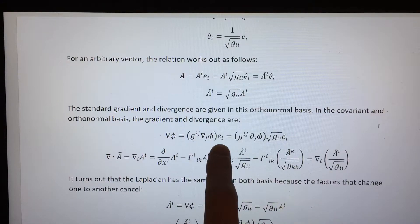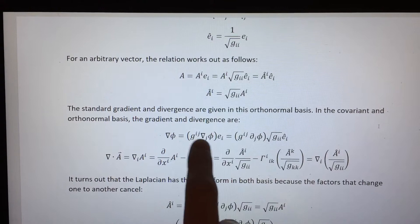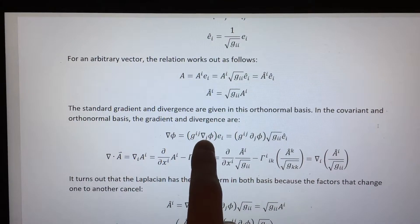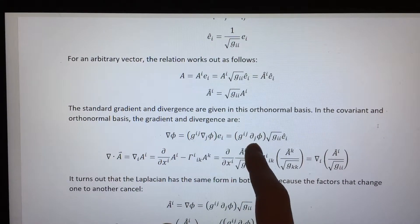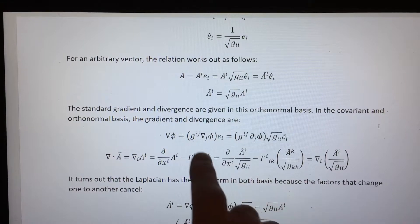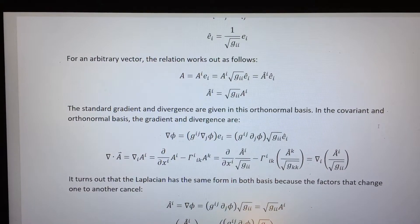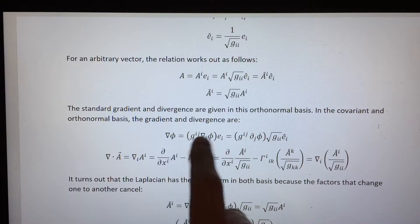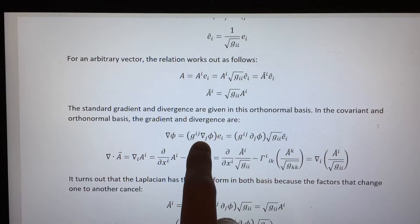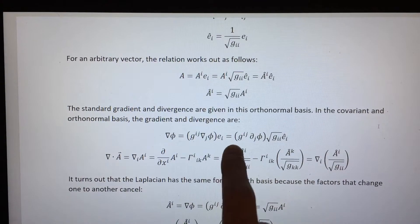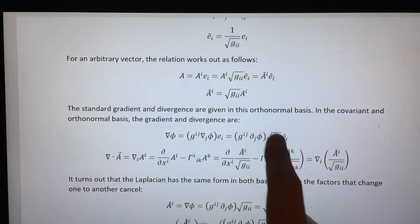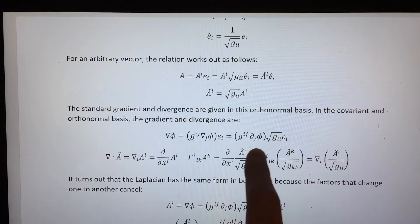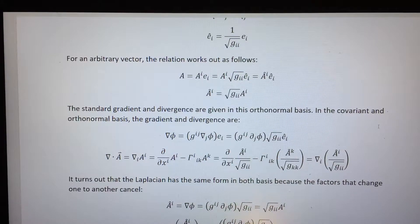So let's start with the gradient in the covariant basis. We've got the covariant derivative on a scalar, which just reduces to a partial derivative because it's a scalar, and then we have the index raised because the standard gradient refers to the contravariant components in the orthonormal basis. These are the contravariant components in the covariant basis, so you perform a change of basis and you get the components in the orthonormal basis — which is exactly what the standard gradient is.